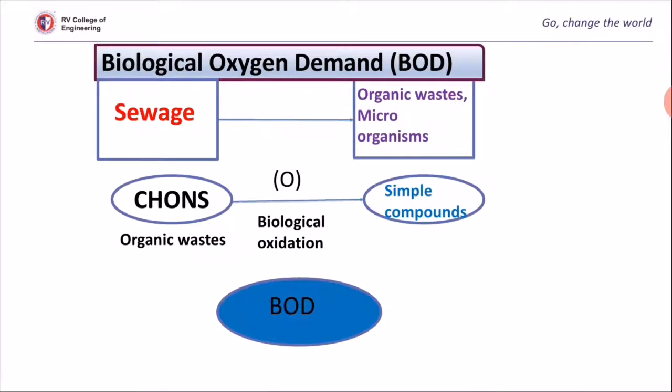Oxygen is sparingly soluble in water, about 9 ppm at 20 degrees centigrade in fresh water. This water gets polluted by many wastes. It may be from industry or it may be from domestic sources.